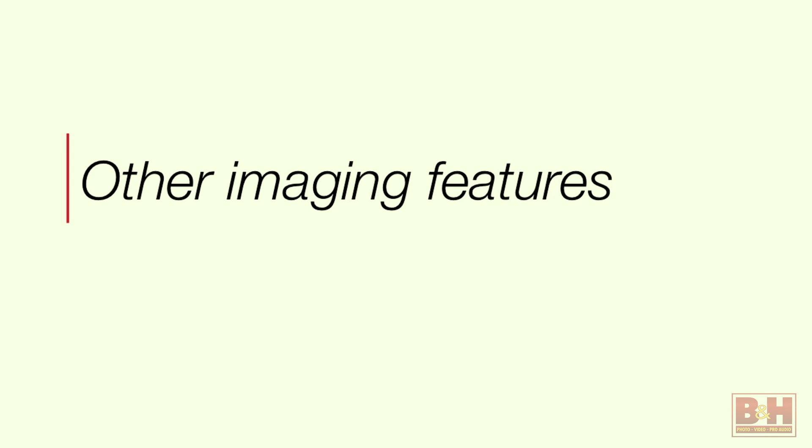Some of the other imaging features in the camera. As we talk about these, some are new if you're coming from an older 5D model. If you're coming from a 5D Mark III or Mark II, you'll see things you haven't seen before. But some have been introduced in cameras like the 5DS, 5DSR, EOS 7D Mark II, or EOS 1DX Mark II, so if you're familiar with those, these won't seem brand new.